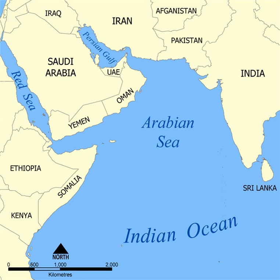Gulf: a very large bay, often a top-level division of an ocean or sea. Fjord: a long bay with steep sides, typically formed by a glacier. Bight: a bay that is typically shallower than a sound. Sound: a large, wide bay which is typically deeper than a bight, or a strait.